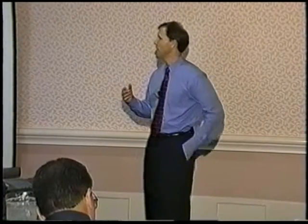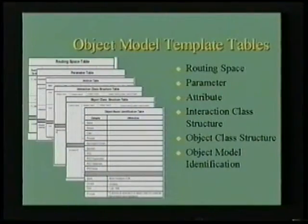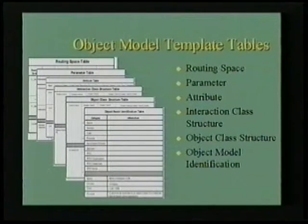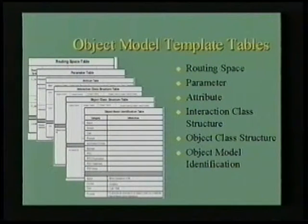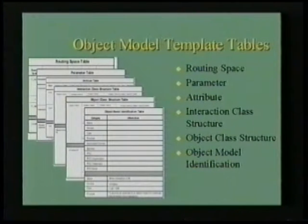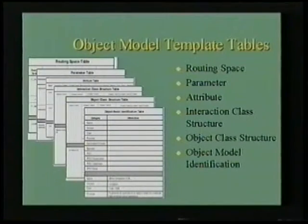The object model templates — this is a snapshot of some of those templates. They essentially allow you to express information about the objects you're going to publish, the events you're going to publish, the attributes about each object you're going to share, and the class structure of the objects. For example, letting the world know that an F-16 is a member of a class called jet, which is a member of a class called aircraft, which is a member of a class called vehicle — so that you know what an F-16 is in the larger sense.